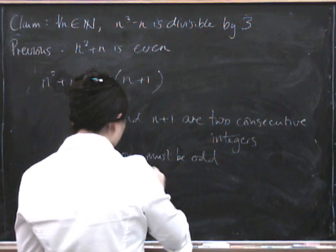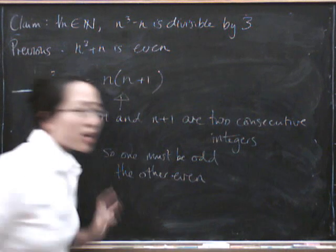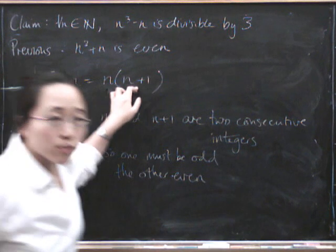So one of them must be even. One must be odd and the other even. Now this is a bit sneaky because we don't actually know which of these is odd and which of these is even.